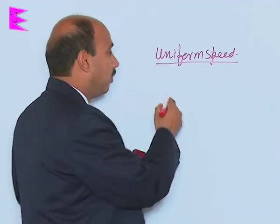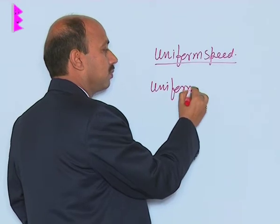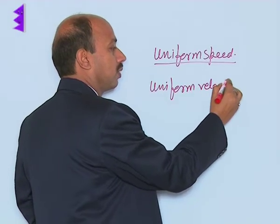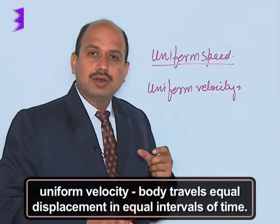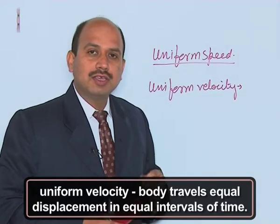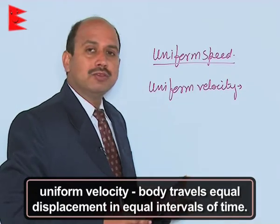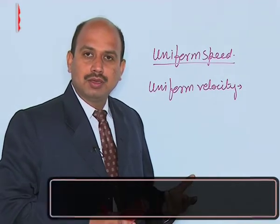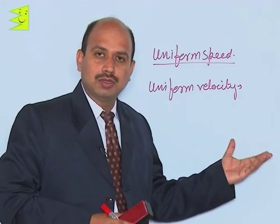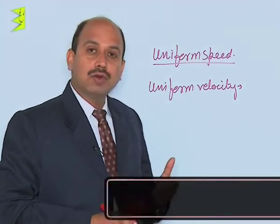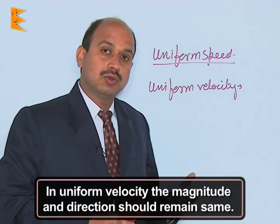Similarly, with uniform velocity, when the body covers equal displacement in equal intervals of time, however small these time intervals may be, the body is said to have uniform velocity. In uniform velocity, the magnitude and direction of the velocity should remain the same.